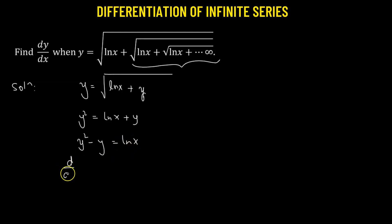Now we'll take the derivative on both sides with respect to x. So we have derivative with respect to x of y squared minus derivative with respect to x of y. This will be equals to derivative with respect to x of natural log of x. Now derivative of y squared with respect to x,